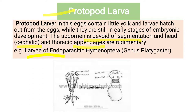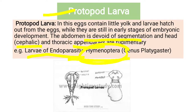These larvae are found in endoparasitic Hymenoptera — insects that live as parasites inside the body of another organism. Hymenoptera include bees and ants. Specifically, the genus Platygaster has larvae of the protopod type.